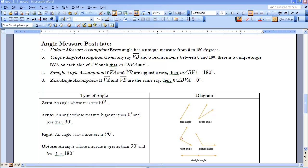As you remember from previous postulates that we have studied, these are things that we assume to be true. So when we look at angles, we have some assumptions that we make, things that we assume to be true, and those are all things that fall under the angle measure postulate.